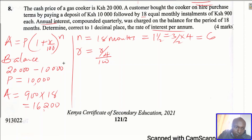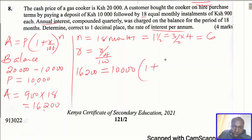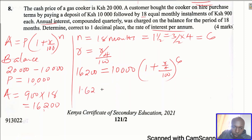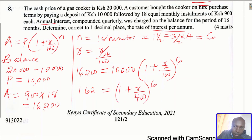Now we substitute everything into the formula and calculate the rate. The amount is 16,200 equals the principal 10,000 times (1 + R/400) raised to the power six. Dividing both sides by 10,000, we get 1.62 equals (1 + R/400) raised to the power six. That is what we are going to get.